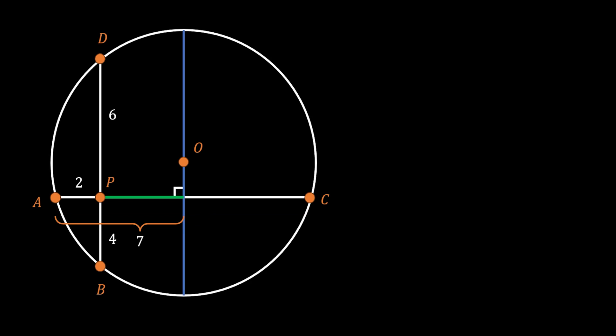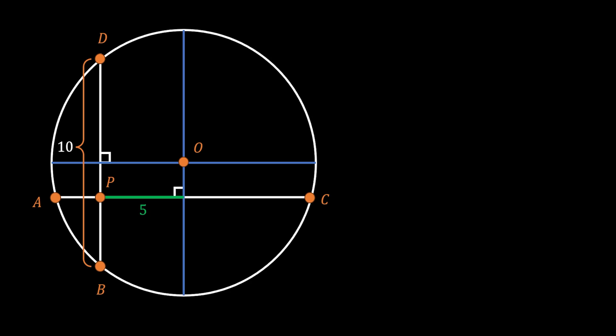Since half of the chord is equal to 7 and the value of segment AP is equal to 2, this green line must be equal to 5. Now looking at chord BD — since it has segments of 4 and 6, the overall length of this chord is equal to 10. If we pull the perpendicular bisector through it, it also divides this chord into two identical segments, so this vertical green line will be half of our chord, which is equal to 5.